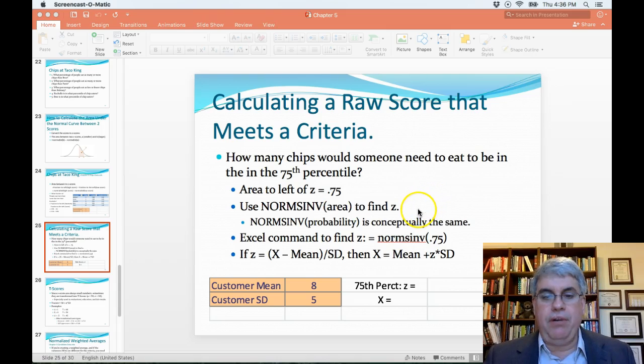The way that we're going to do this is we're going to use NORM.S.INV, the Excel command, to find z. Now, the NORM.S.INV of the area—here we say it's 75 percent—or the NORM.S.INV of the probability would equally apply to find the z.